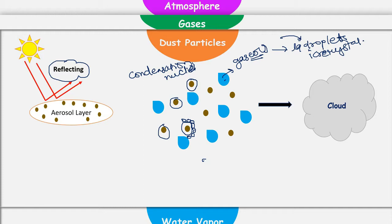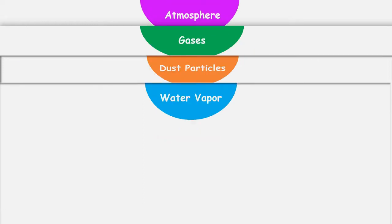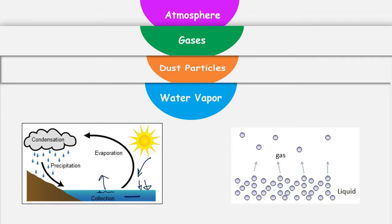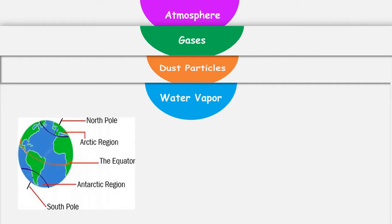These are the two major roles played by dust particles. Now let's see what are the water vapors. Atmosphere gets water vapors through the process of evaporation. In this process, solar radiations are falling on water bodies on Earth's surface. When they fall on water bodies, they increase the temperature of water bodies. When temperature increases, these liquid droplets are converted into gaseous water vapors. That is how our atmosphere gets water vapors. The amount of water vapor available in our atmosphere varies region to region or locally.